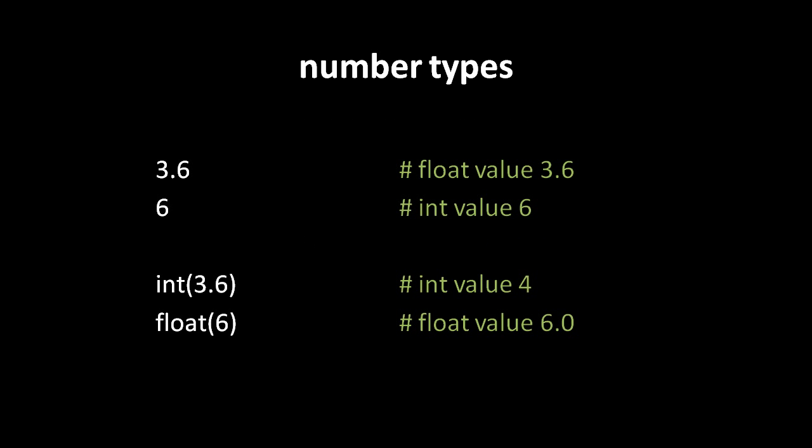Unlike JavaScript where all numbers are stored as floating point values, in Python integer values and floating point values are two separate data types. The integer type is called 'int' and the floating point type is called 'float'. A literal like 3.6 is a float value, while a literal like 6 with no decimal point is an int. If you have a float and want the corresponding integer, pass it to the int constructor — so int(3.6) returns 4. Conversely, float(6) returns the floating point value 6.0.